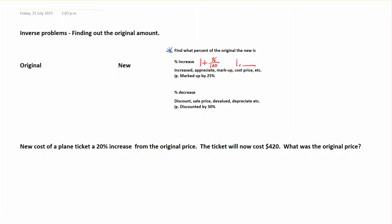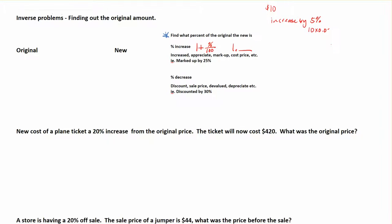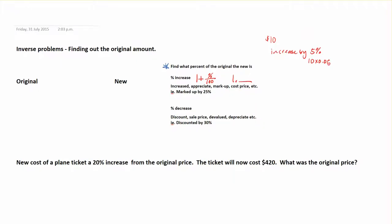If I have $10 and I increase by 5%, one thing you can do is find 5% of 10. So we go 10 times 0.05, and you get $0.50. Then you add that back onto the 10 — 10 plus that 50 cents — so this is now equal to $10.50.